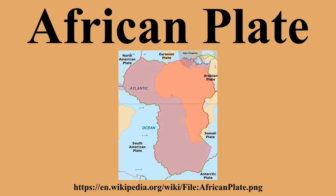Alternatively, the Saharan metacraton may consist of a collection of unrelated crustal fragments swept together during the Pan-African Orogeny. In some areas, the cratons are covered by sedimentary basins, such as the Tindouf Basin, Taoudeni Basin, and Congo Basin, where the underlying archaic crust is overlaid by more recent Neoproterozoic sediments. The plate also includes shear zones such as the Central African Shear Zone and rifts such as the Anza Trough, where the crust was pulled apart and the resulting depression filled with more modern sediment.